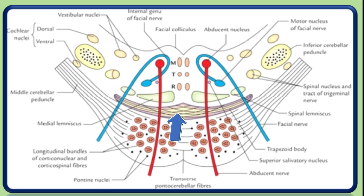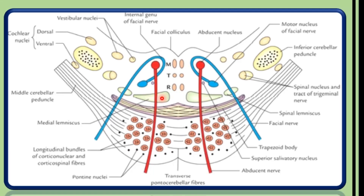The next structure is the medial lemniscus — formed as we saw in our lecture on the medulla. On that tract of the medial lemniscus, we have the spinal lemniscus. In the paramedian plane, we see the medial longitudinal fasciculus and the tectospinal tract. Also present is the tract of the spinal nucleus of the trigeminal nerve.